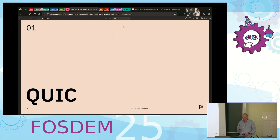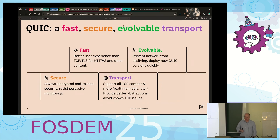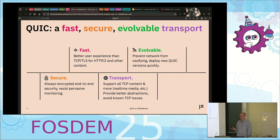A little reminder of QUIC: QUIC is a fast, secure, evolvable internet transport. Fast means it should at least deliver the same performance as TCP and TLS have for HTTP/2 — ideally it should be better, because otherwise why bother.